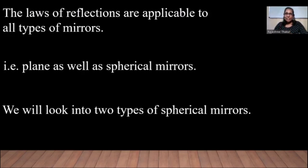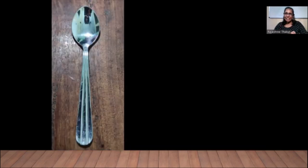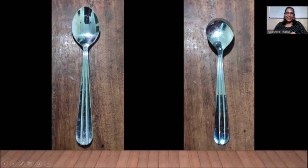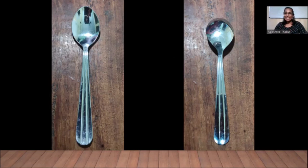We will look into two types of spherical mirrors. But before we see actual mirrors, let's look at something we use every day — a spoon. One surface is curved inwards and the other side is curved outwards. If you have seen your image in these surfaces, the nature of the image is not the same; it is different in both surfaces.